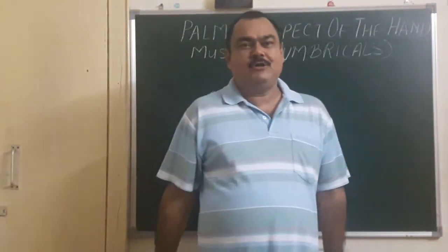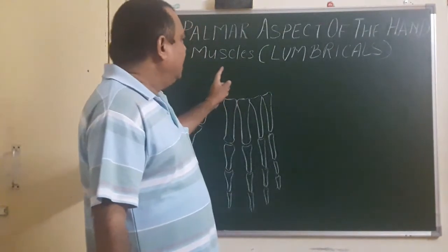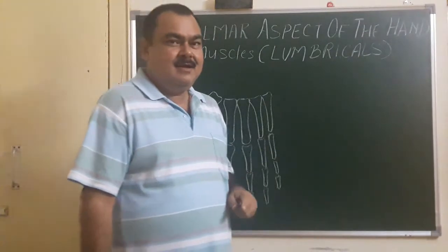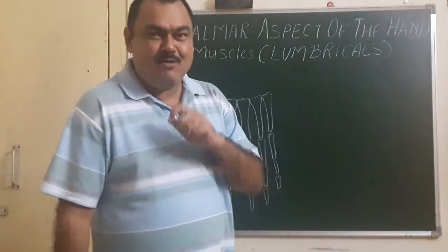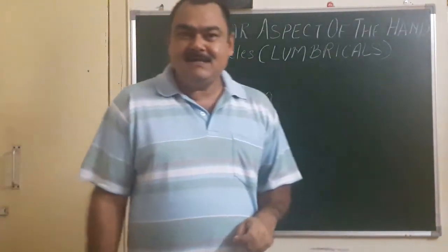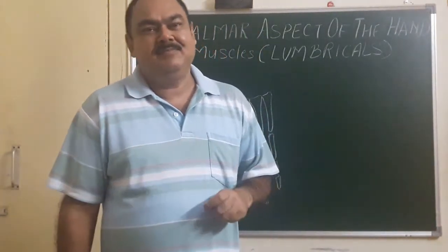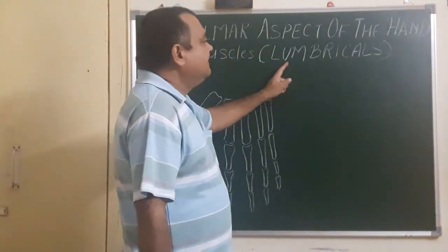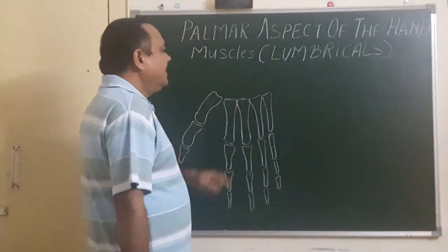Now we'll discuss the muscles of the palmar aspect of the hand. Having seen thenar muscles and hypothenar muscles, we'll now discuss the lumbricals. Lumbricals is a Latin word meaning earthworm — these muscles resemble earthworms, which is why they are named lumbricals.